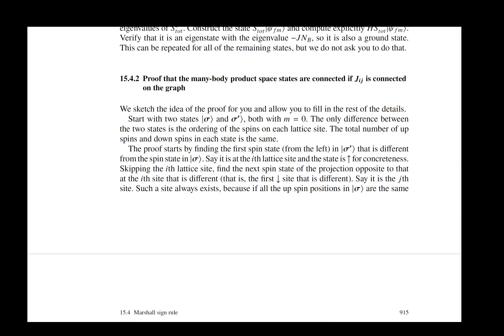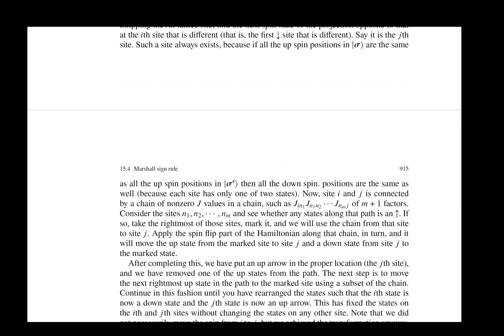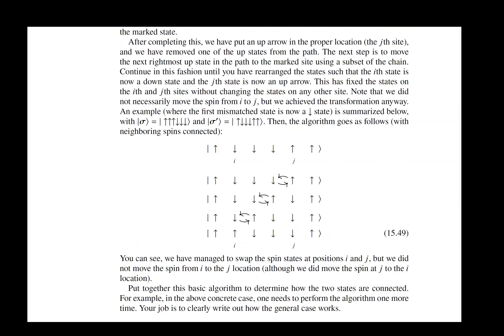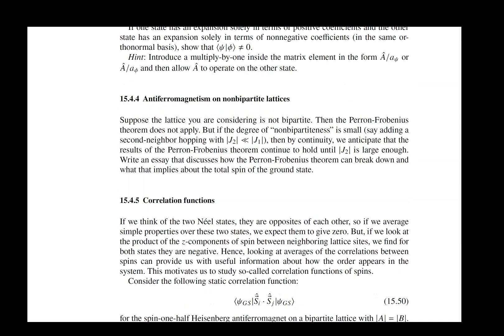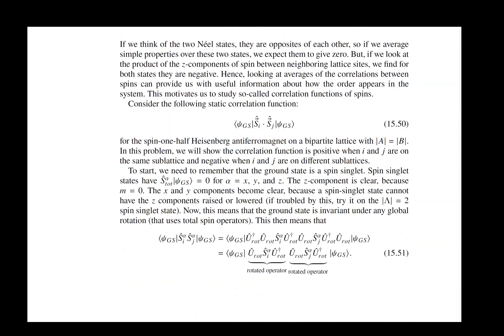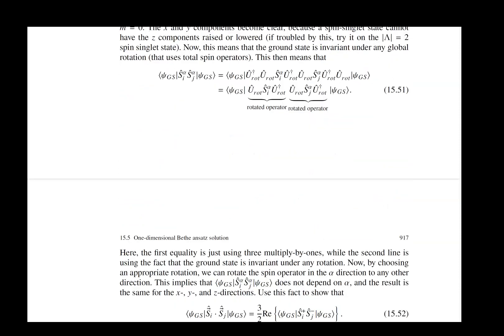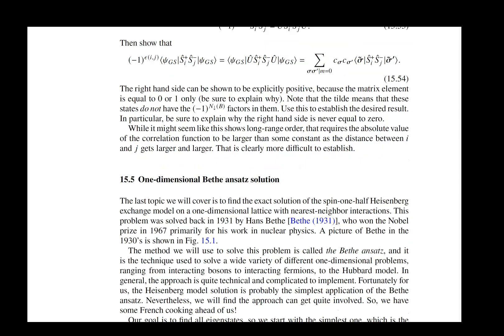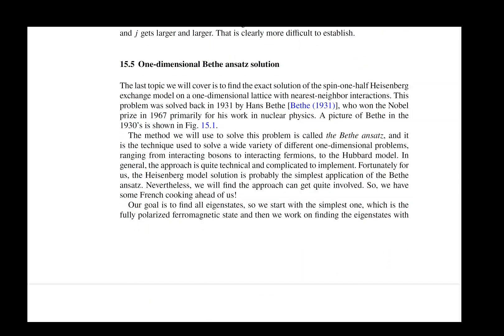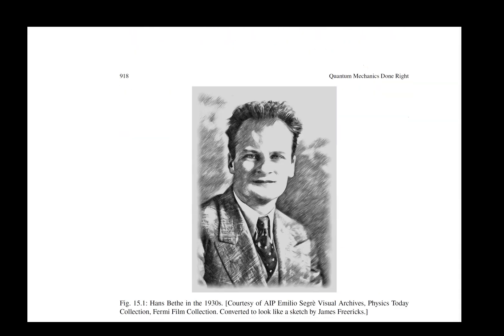That might sound like a simple thing, but determining the quantum number of ground states in general for a class of Hamiltonians is a pretty difficult thing to actually do. And that's why these kinds of theorems that can be proven are really powerful theorems. And you need to pay attention to them when they exist. And then our last section is on the Bethe ansatz solution. Here's our picture of Bethe.